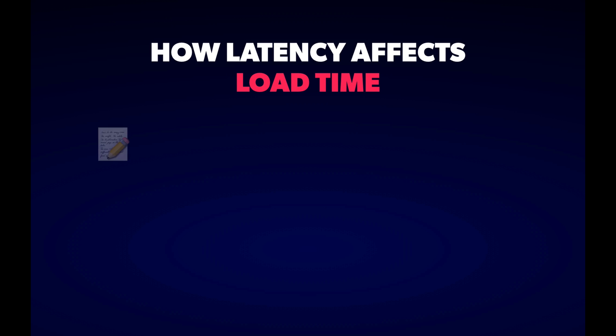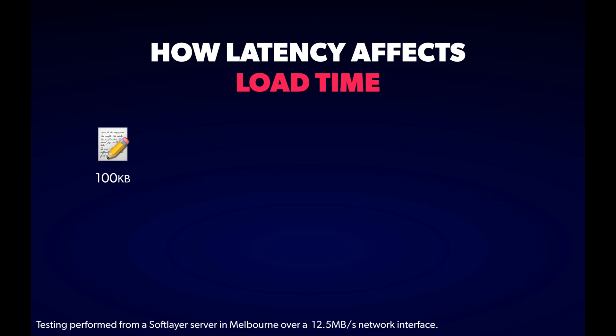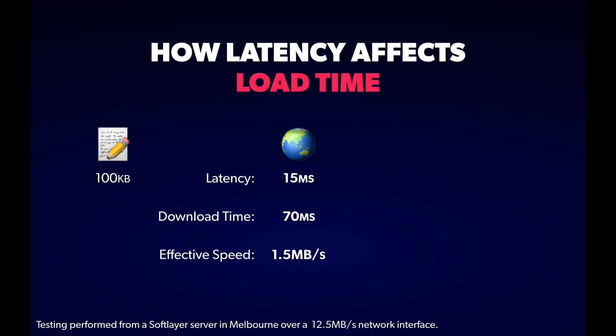I've set up a couple of experiments to demonstrate just how much influence latency has. Consider a relatively small file — 100 kilobytes — downloaded over a fast connection of around 12 megabytes a second. In my testing, the median time to download that file from a server 15 milliseconds away was 70 milliseconds — pretty fast, but it works out to a download speed of only 1.5 megabytes a second, nowhere close to maxing out the connection. So what about another server halfway around the world? It takes 160 milliseconds for a single packet to travel there and back — pretty fast considering the distance, but quite a long time for a computer and noticeable for a human.